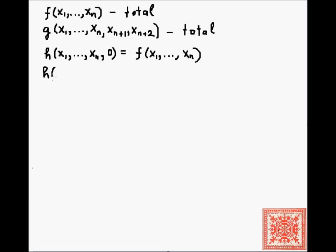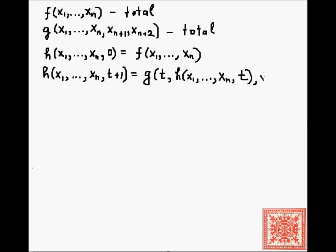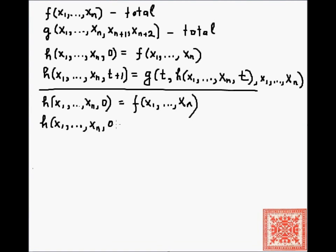In the recursive case, h of x1 through xn and t+1, where t is a natural number, equals g of t, then h of x1 through xn and t (the previous value), and then x1 through xn. This is essentially the same idea as in the first definition, except that now g has access to the arguments x1 through xn. The base case is just a call to f.